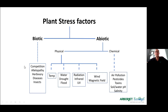Looking at our chart: competition, allelopathy, herbivory, diseases, and insects are all biotic — those are generally easier to diagnose. Abiotic can be physical or chemical, with a wide range of possibilities: is it too hot, drought, too dry, too wet? Radiation, infrared and UV — is it getting too much light or not enough? Wind, air pollution, pesticides, toxins, improper chemical spills, soil and water pH, and salinity — most plants don't like salt.